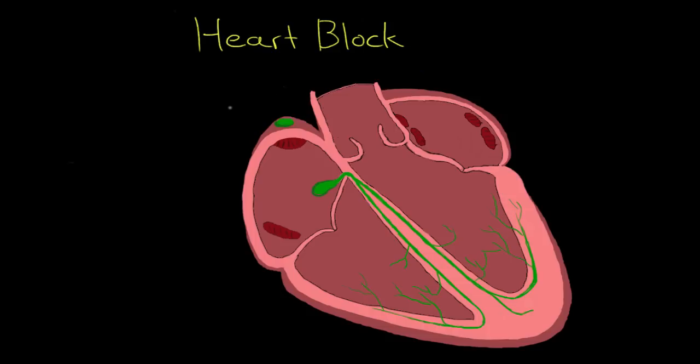The heart's job is to pump blood. It uses an electrical signal to coordinate its muscular contractions in a way that is most efficient for pumping blood. Those electrical signals are generated near the top of the heart at a little patch of tissue called the sinoatrial node.